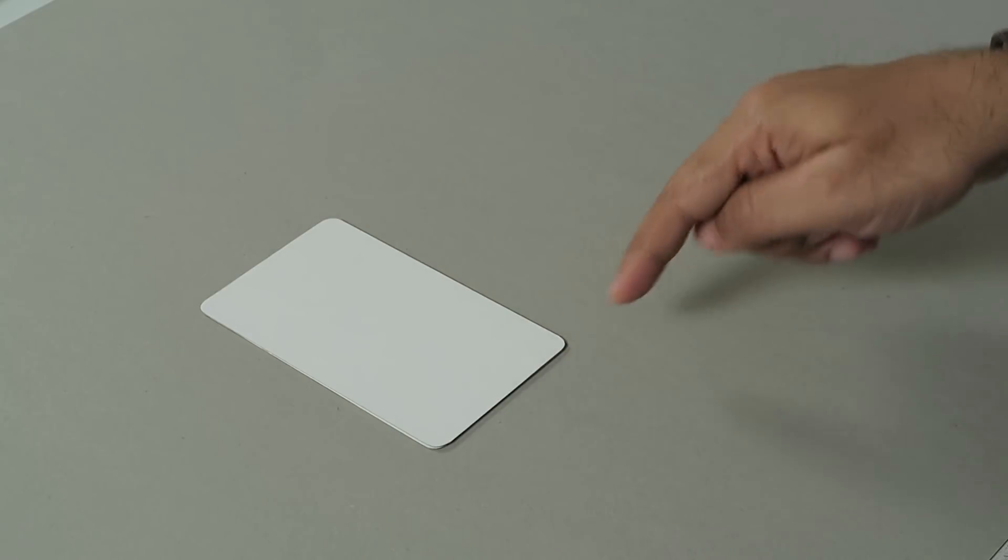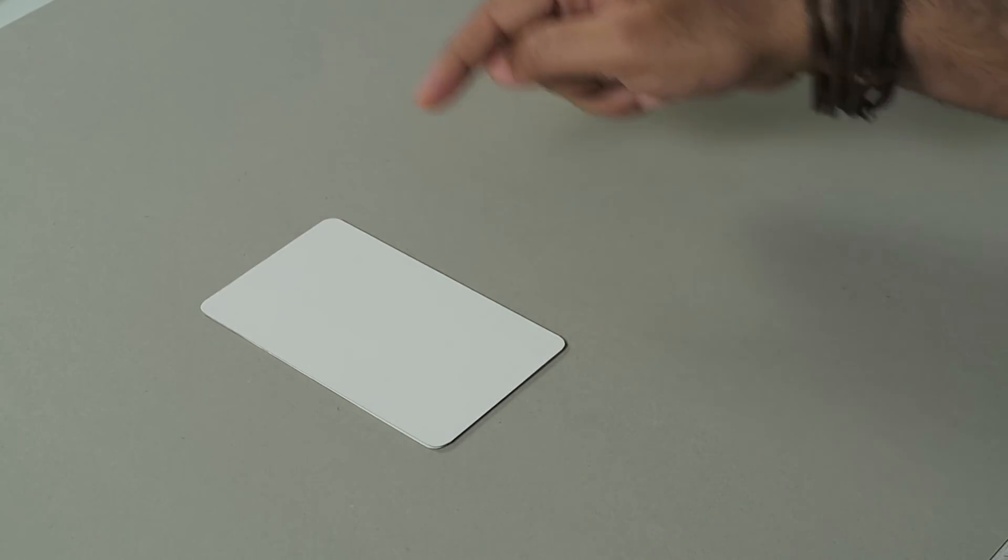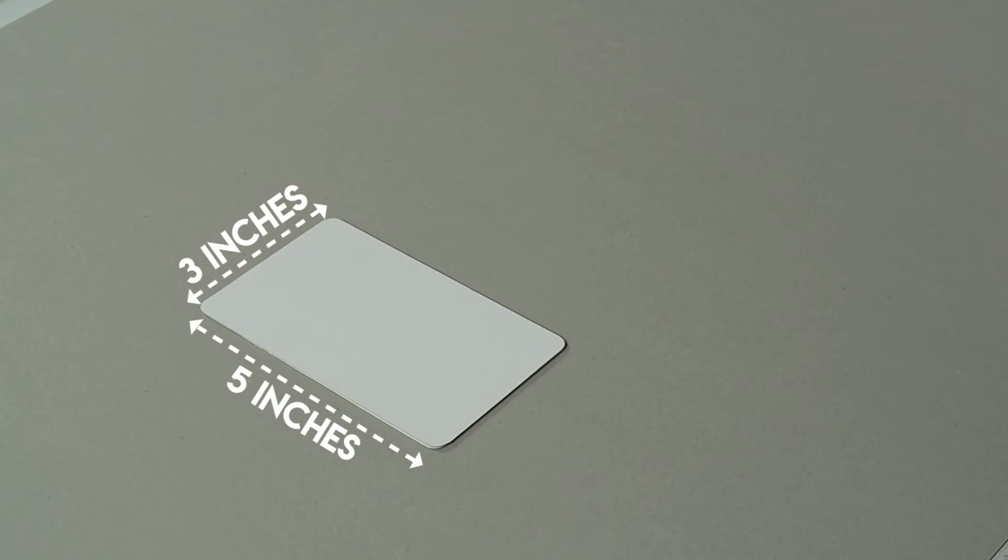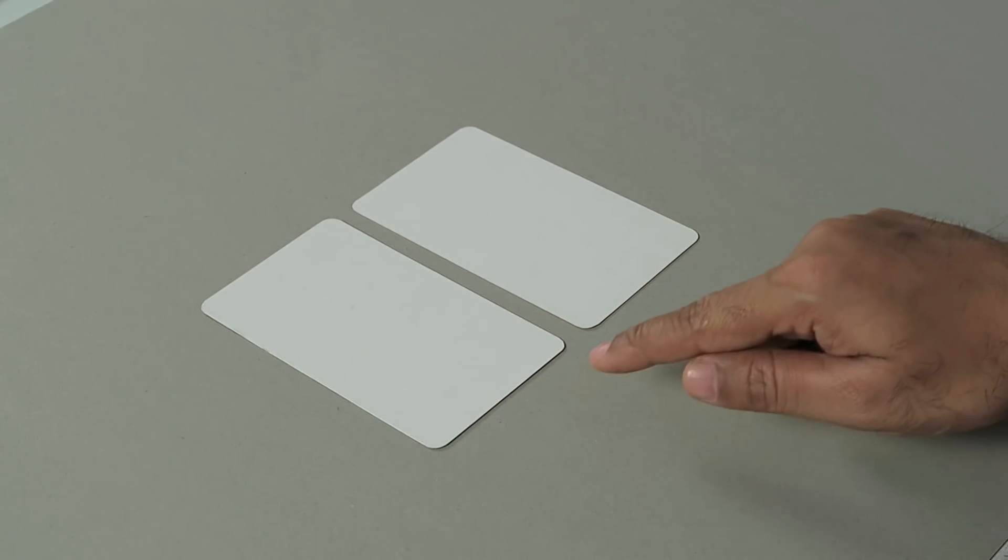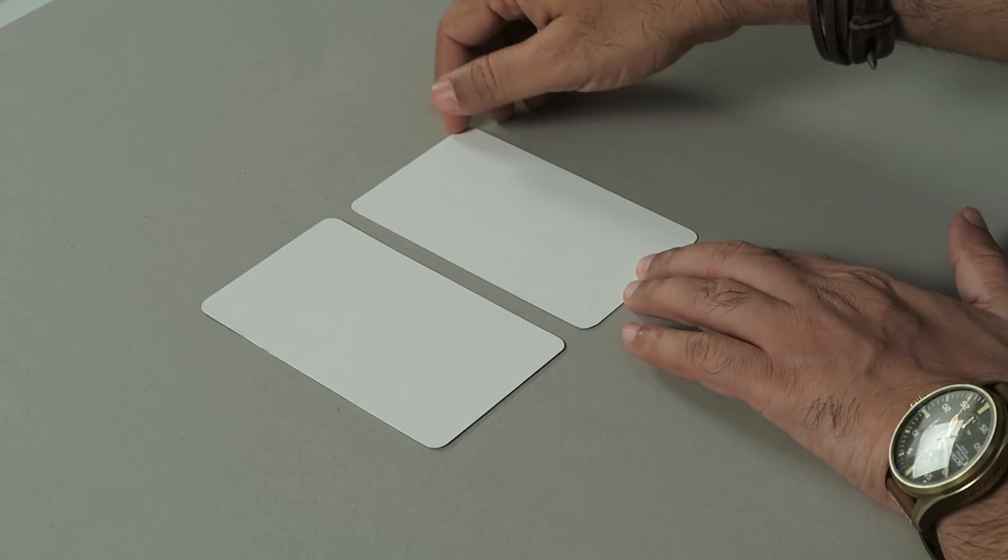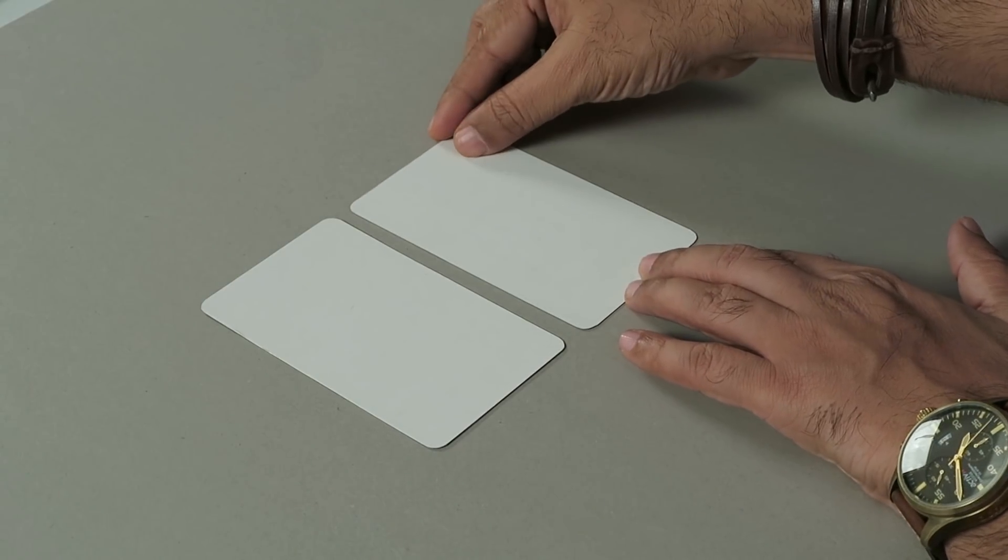So here you can see I have a small box board cutout. The size of this is 3 inches by 5 inches. So I want to make a mini diary and that's why I have selected this size. In fact, I have two.